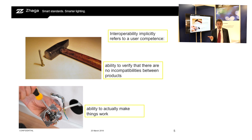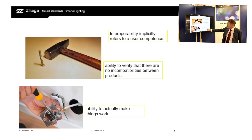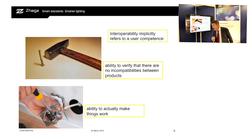A user must be able to verify that there are no incompatibilities between a product. A user must be able to actually make things work. Both these abilities are comprised within the word CAN. Maybe abstract — let me give you some examples.